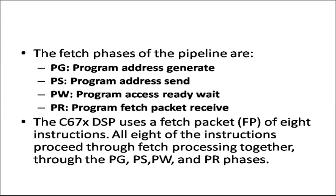So PG, PS, PW, and PR stand for address generate, address send, ready wait, and packet receive. The C67x DSP uses a fetch packet of eight instructions, since there are eight functional units, so we can fetch eight instructions simultaneously. All eight instructions proceed through PG, PS, PW, and PR together. This parallel processing is called pipelining, as opposed to serial processing where instructions are fetched, decoded, and executed one at a time.